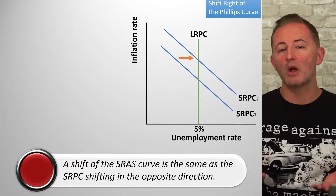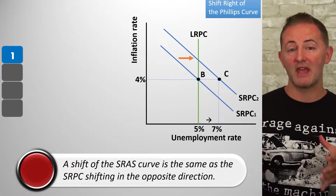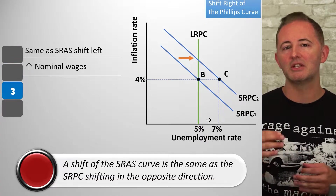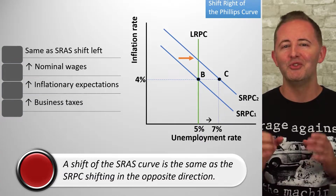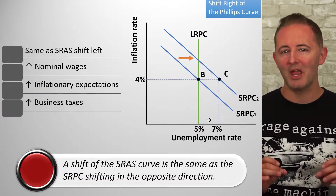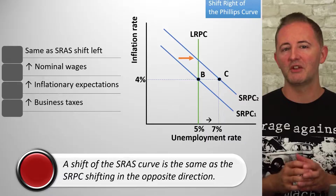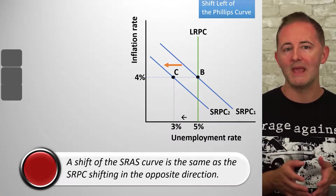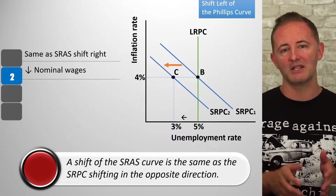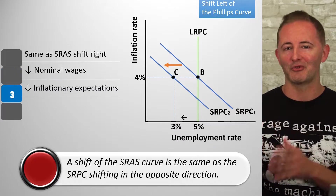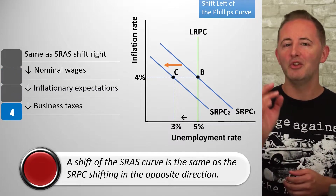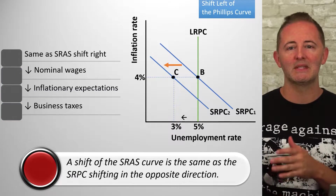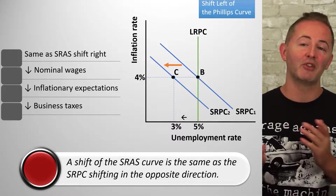This shows us what shifts the SRPC: shifts of the SRPC are caused by the same things that shift the SRAS curve. You need to be careful because the shifts are in opposite directions — when the SRAS shifts left, it's the same as the SRPC shifting right, and the SRAS shifting right is the same as the SRPC shifting left.